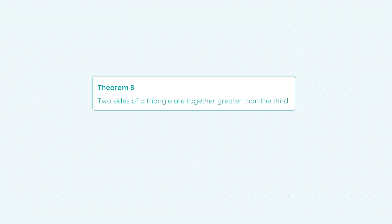Hi guys, Sean here from StudyClicks and in this video we're going to be looking at another theorem. This is theorem 8 which states that two sides of a triangle are together greater than the third.